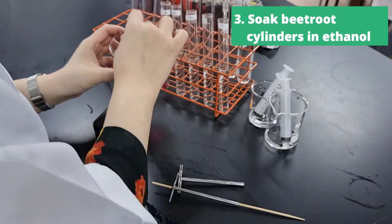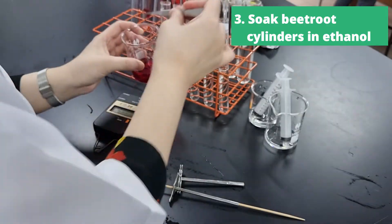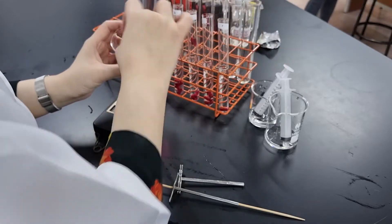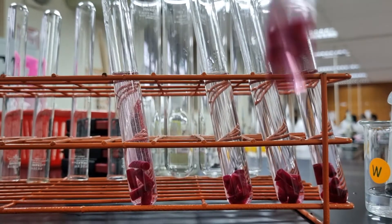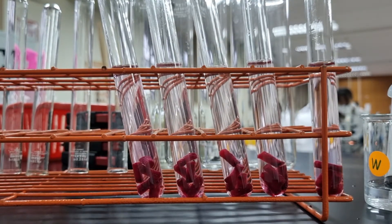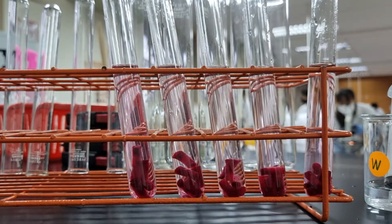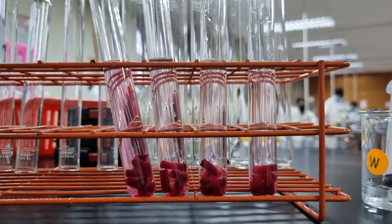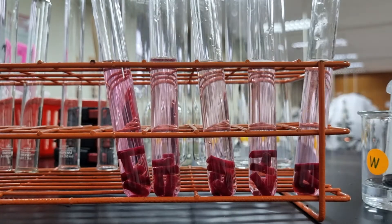After that is done, we actually place five beetroot cylinders into each concentration which are in test tubes here. And then we start the timer. Now this is a source of error because it's humanly impossible to put 25 pieces of beetroot cylinders into each concentration at the same time. It's very difficult. Now as we time 10 minutes, every minute we are going to mix the test tubes a little bit to ensure even dye distribution. And this makes sure that there is an even concentration gradient for the pigment to diffuse down.